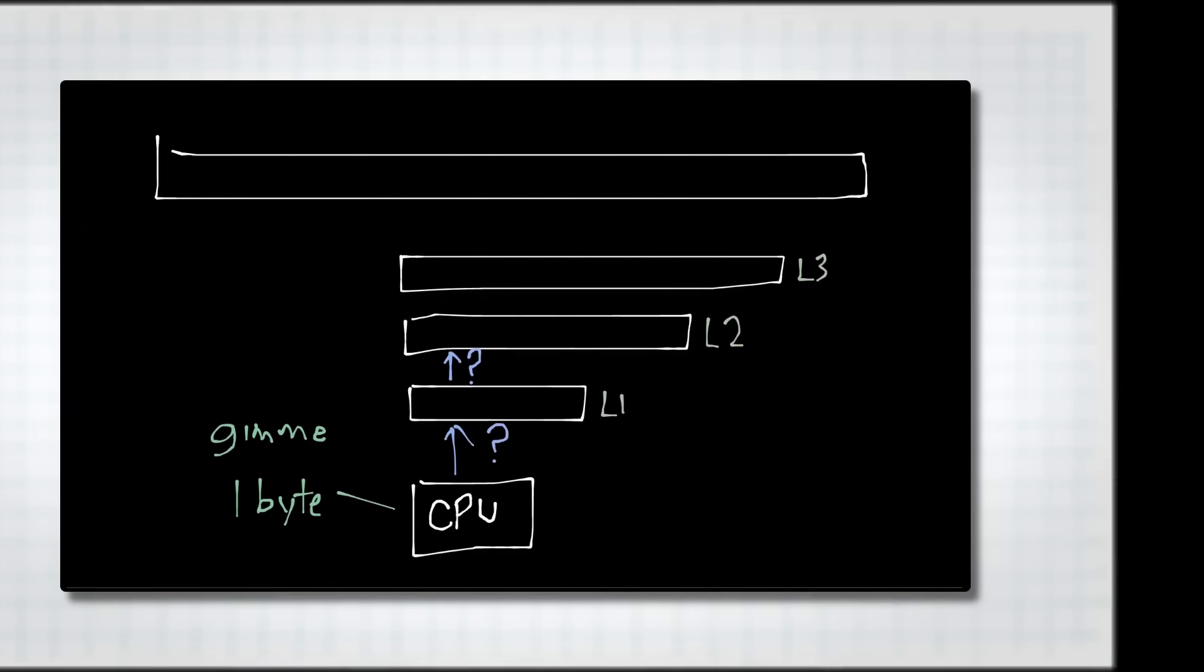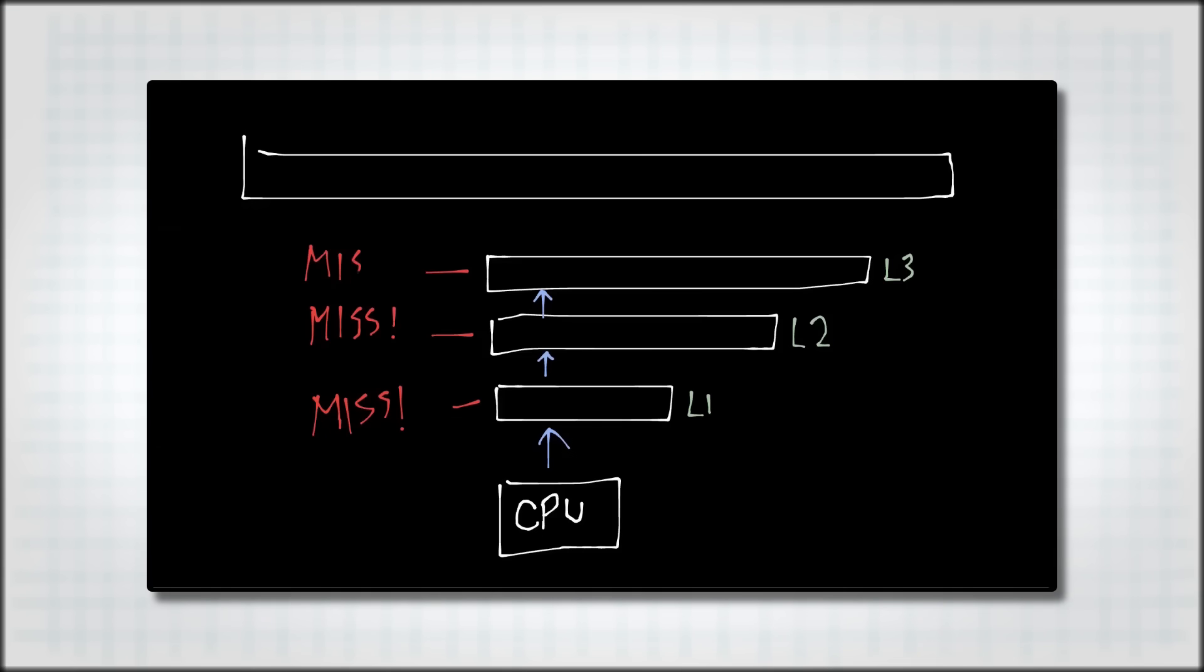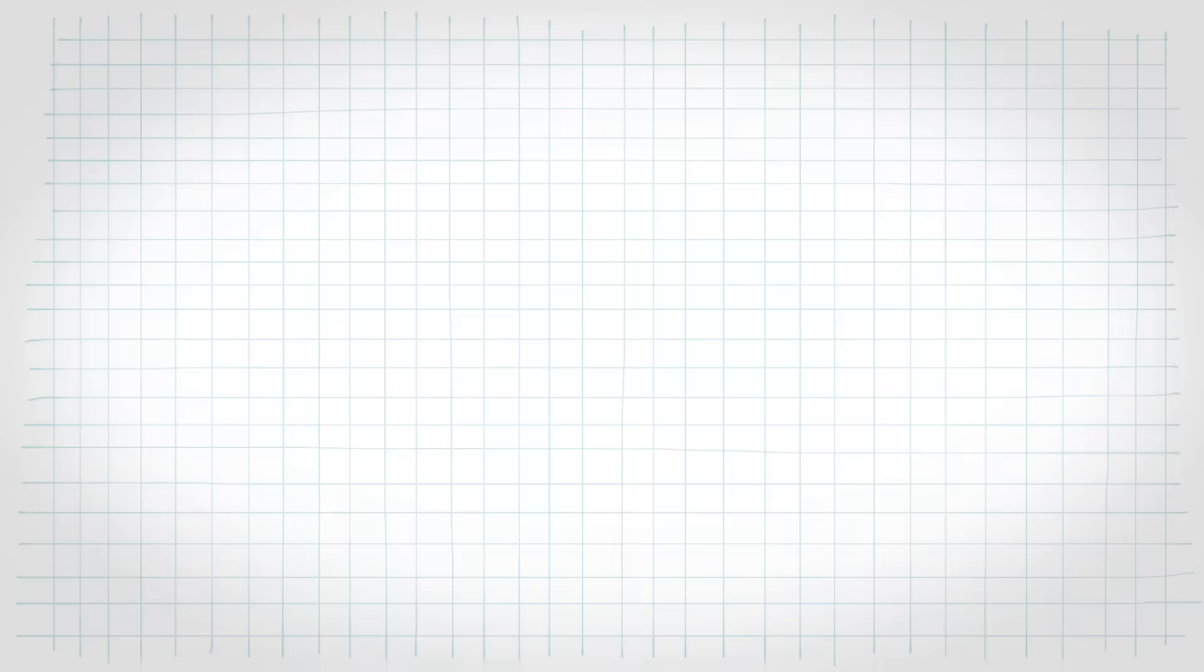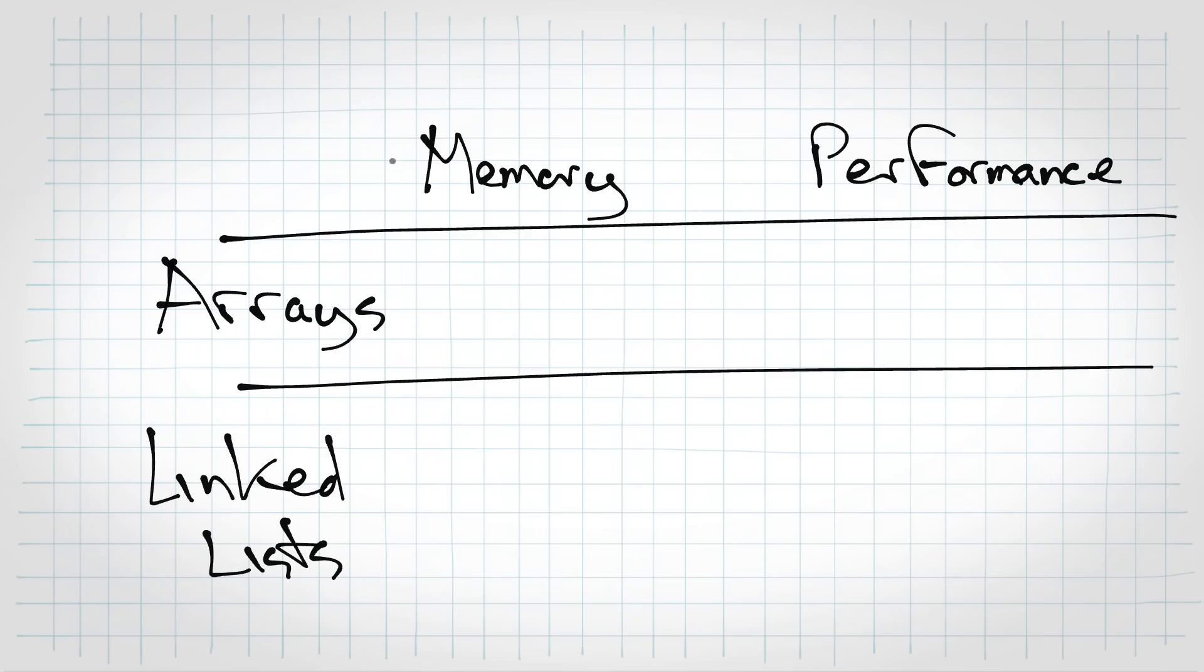Now, let's compare them to arrays. I really hope you're up to speed on cache locality, otherwise, make sure to watch the first video in the series before we move on. We can compare arrays and linked lists along two dimensions. There's performance, and there's memory usage. Let's walk through some common operations now.